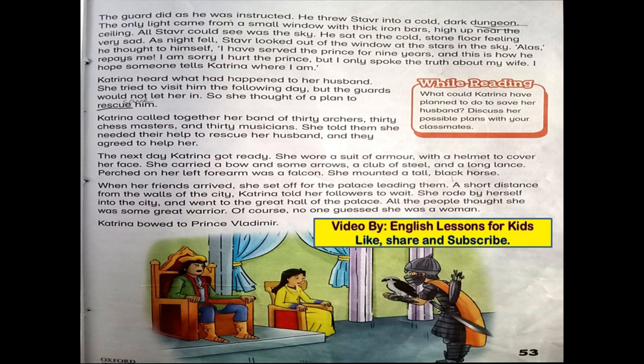The only light came from a small window with thick iron bars high up near the ceiling. All Steve could see was the sky. He sat on the cold stone floor feeling very sad. As night fell, Steve looked out of the window at the stars. 'Alas,' he thought to himself, 'I have served the prince for nine years and this is how he repays me. I am sorry I angered the prince, but I only spoke the truth about my wife. I hope someone tells Katrina where I am.'